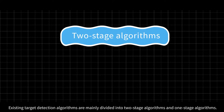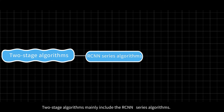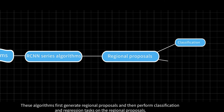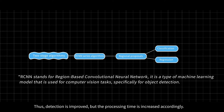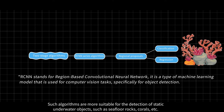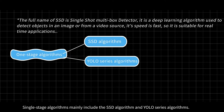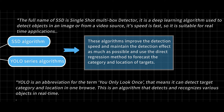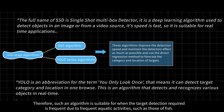Existing target detection algorithms are mainly divided into two-stage algorithms and one-stage algorithms. Two-stage algorithms mainly include the RCNN series algorithms, which first generate regional proposals and then perform classification and regression tasks on them. Thus, detection accuracy is improved, but processing time is increased. Such algorithms are more suitable for the detection of static underwater objects, such as seafloor rocks and corals. Single-stage algorithms mainly include the SSD algorithm and YOLO series algorithms, which improve detection speed while maintaining detection performance, using direct regression to forecast the category and location of targets. Such algorithms are suitable for when target detection is required frequently, due to frequent aquatic activities such as those of fish.